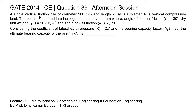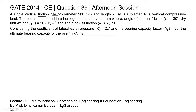In this question, a single vertical friction pile is given of diameter 500 millimeter and length 20 meter. The soil properties are: angle of internal friction φ equal to 30 degrees, dry unit weight 20 kN/m³, angle of wall friction δ equal to 2φ/3, and coefficient of lateral earth pressure K equal to 2.7. We need to find the ultimate bearing capacity of the pile. This question is from the topic of bearing capacity of pile. For detailed theory, refer to Lecture 39 - Pile Foundation, Geotechnical Engineering 2, Foundation Engineering by Professor Dilip Kumar Bayad, IIT Kharagpur.